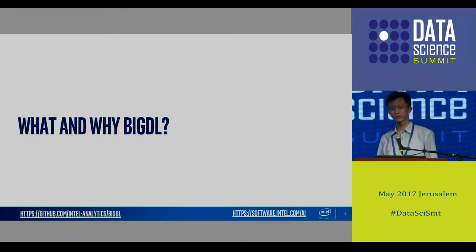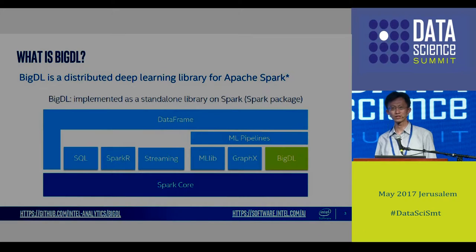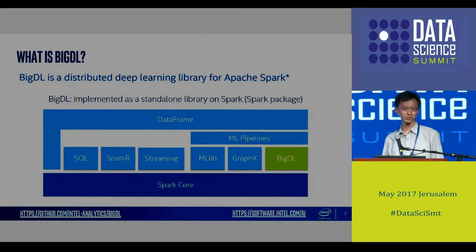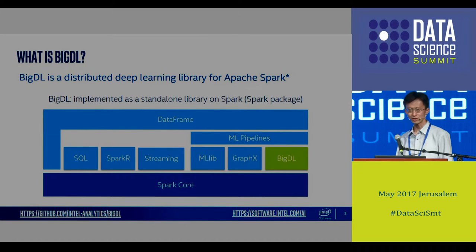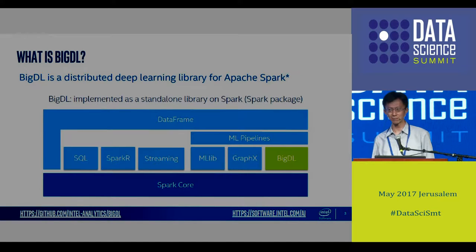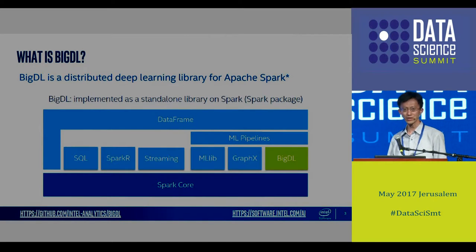Today my topic is to build deep learning on Apache Spark with BigDL. BigDL is a distributed deep learning library on Apache Spark. Spark has been the most active big data computing engine for years, and what we are doing is trying to support the deep learning capability on it to help companies easily develop deep learning applications. BigDL is fully implemented into the Spark ecosystem.